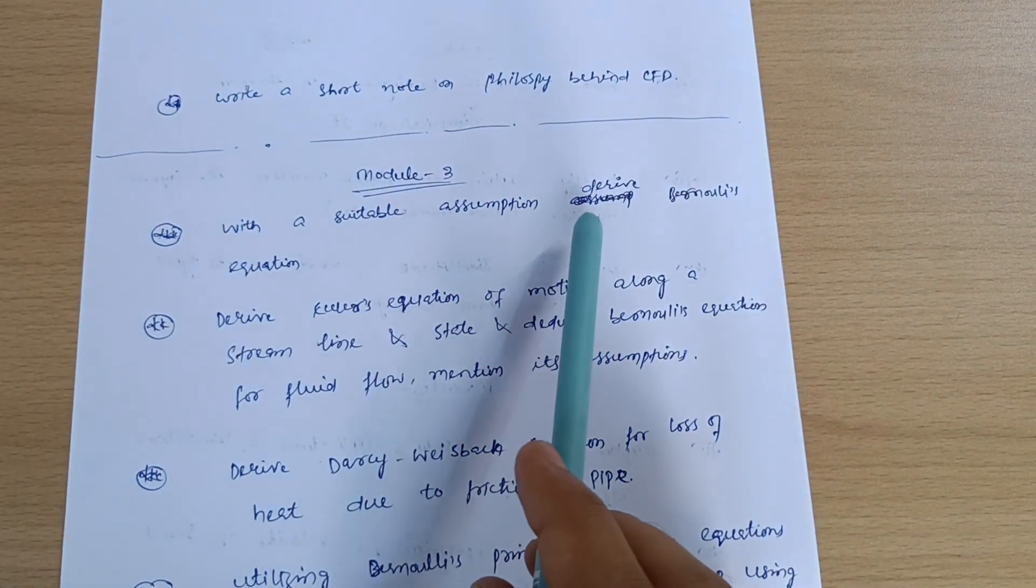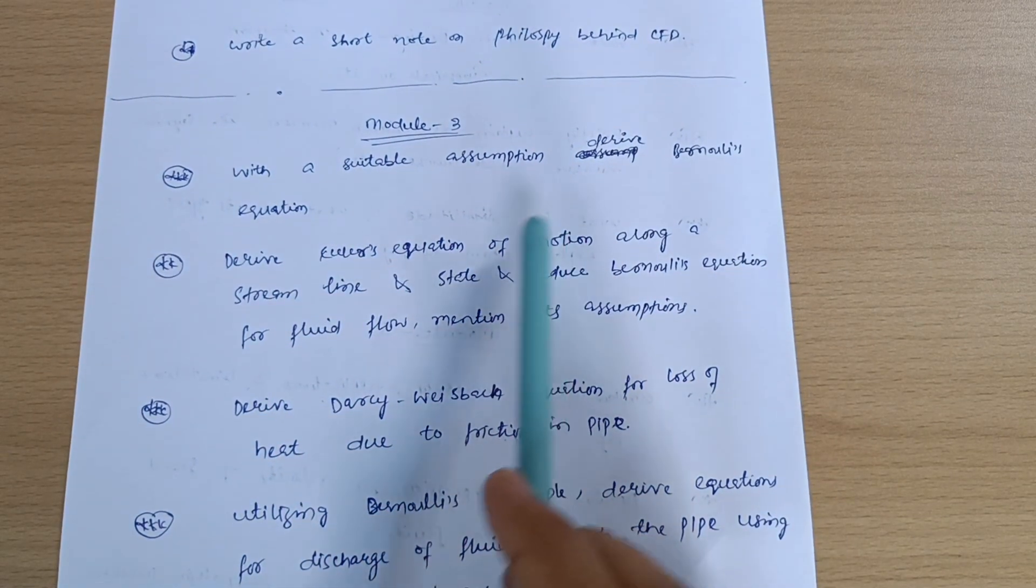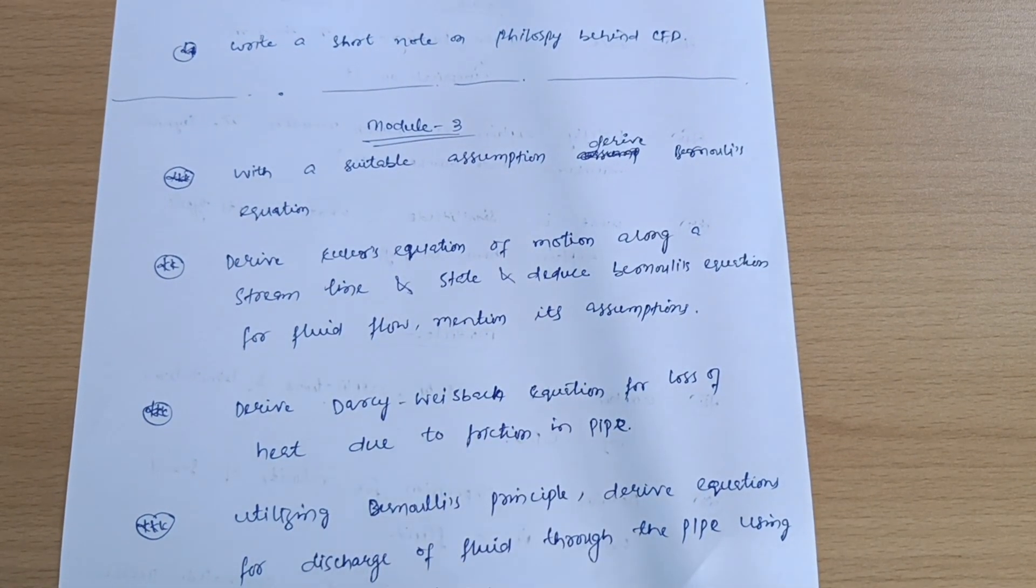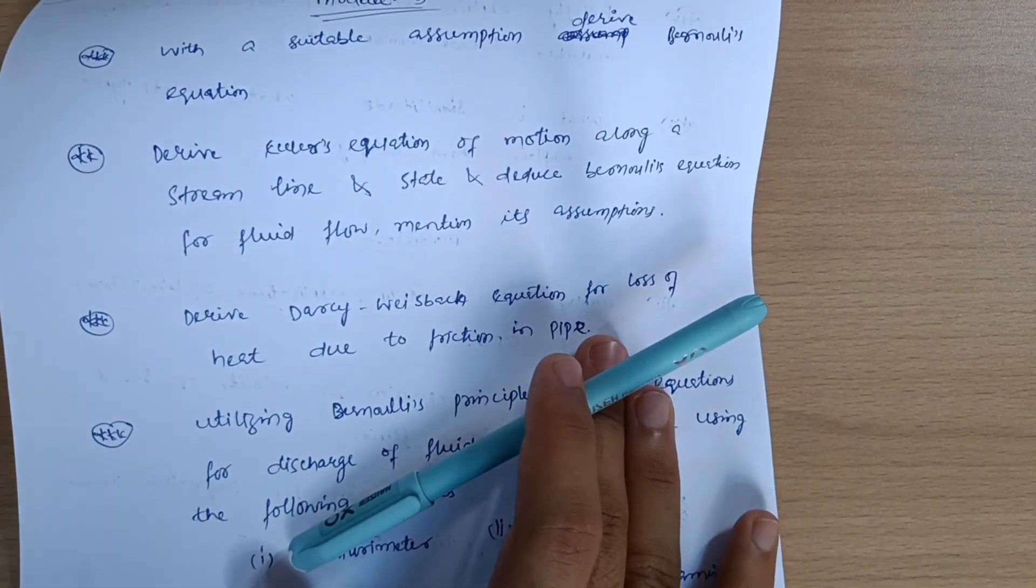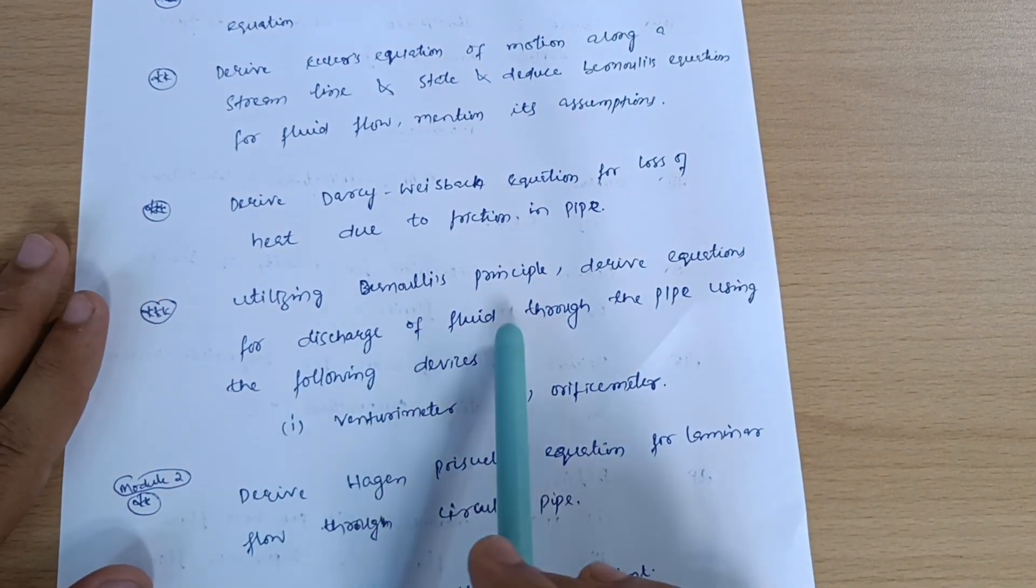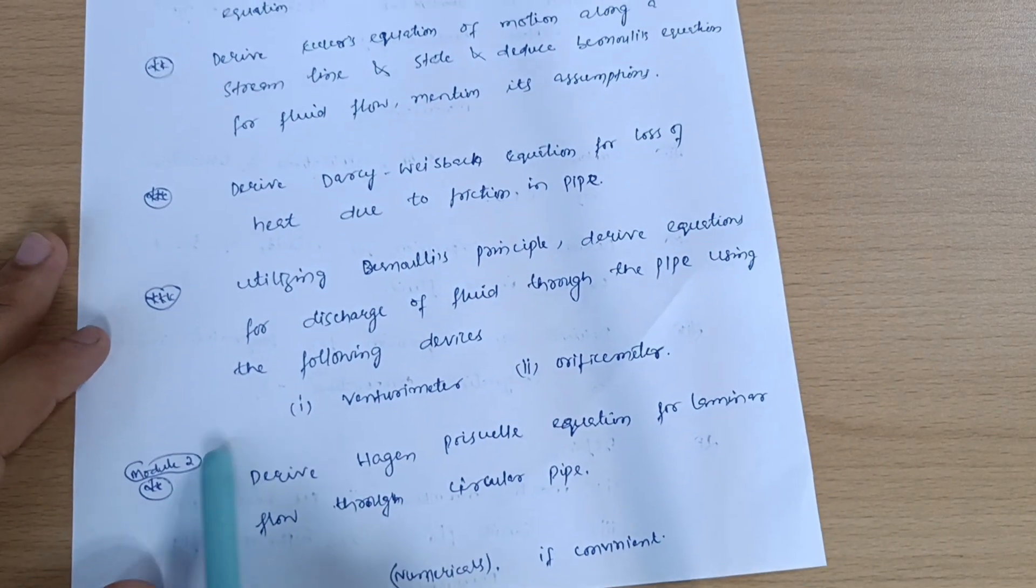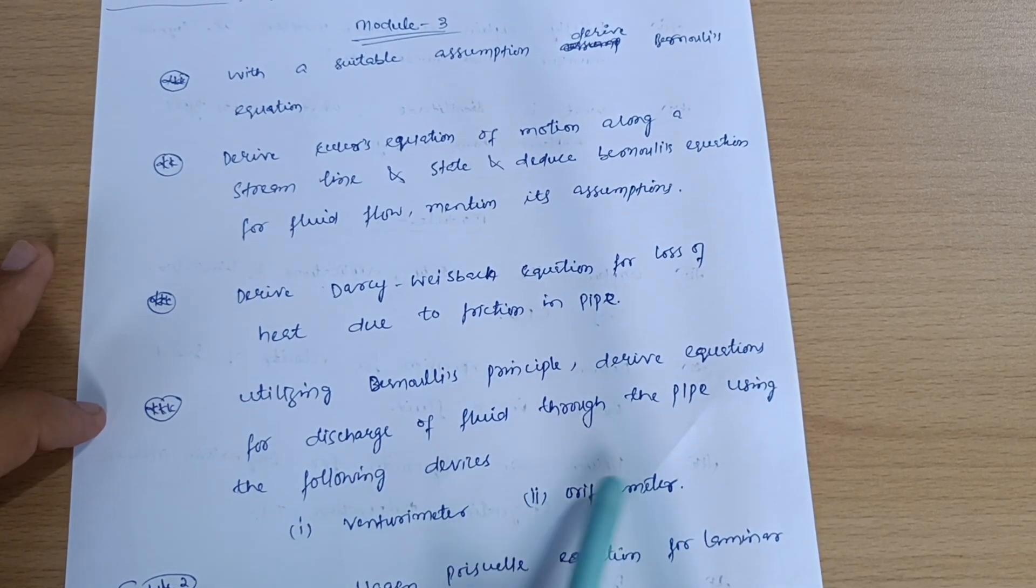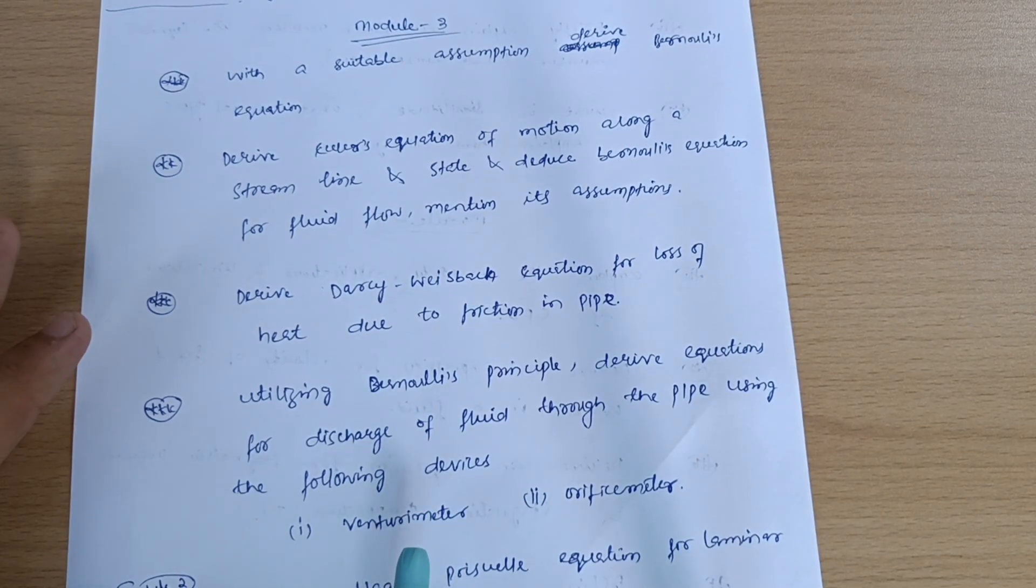Next is Module 3. With a suitable assumption, derive Bernoulli's equation, or they may ask like this: derive Euler's equation of motion along a streamline and state and deduce Bernoulli's equation for fluid flow. Mention its assumptions. Derive Darcy-Weisbach equation for the loss of head due to friction in pipe. Utilizing Bernoulli's principle, derive equations for discharge of fluid through the pipe using the following devices like venturimeter and orifice meter.